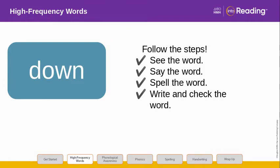Look at the letters in the word. Let's spell it. Down. D-O-W-N. In this word, the letters O-W stand for the sound OW. Blend with me. D-O-W-N. Down. Now write the word down. Try to write it without looking. Then check it.